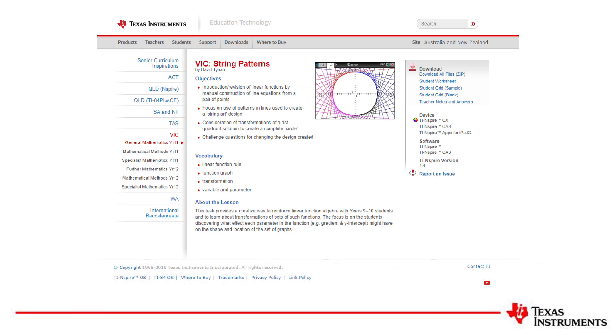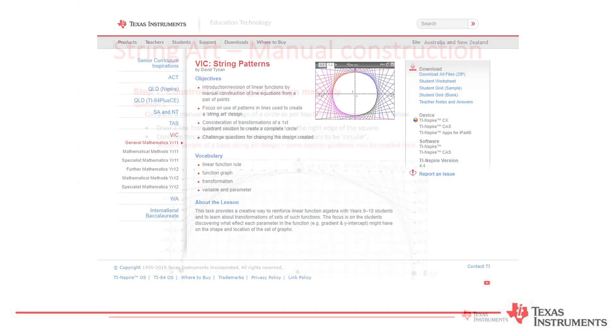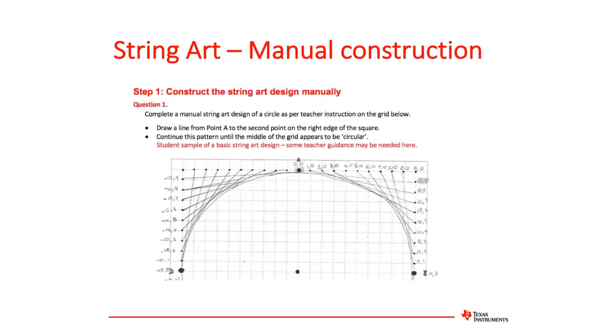So the first thing in String Art is just to introduce the notion of that sort of 70s style artwork where they were able to simulate little curves by just having nails hammered onto a block and drawing string lines between them. In this fairly simplified version, I think it's important that the kids are able to construct a picture of what they're trying to do with technology a little bit later on.